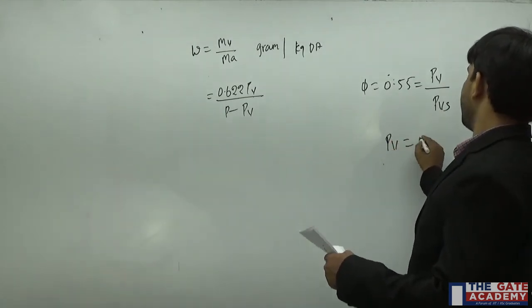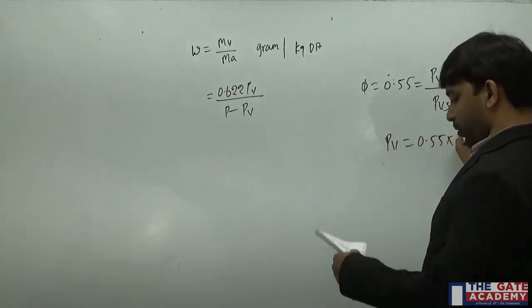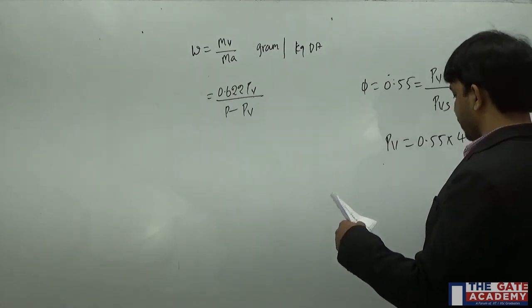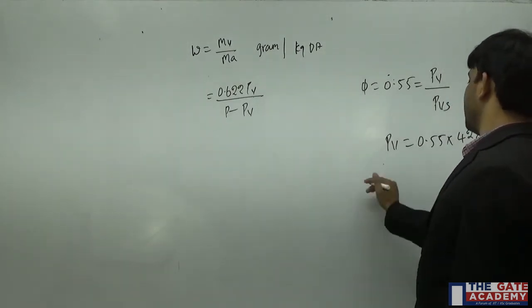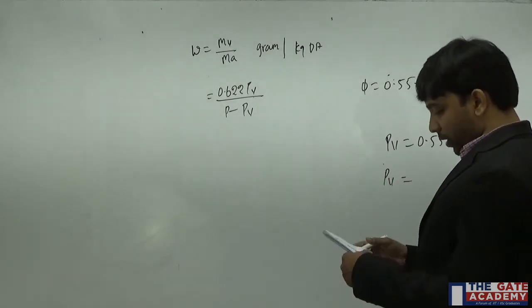So I can write PV is 0.55 into 4246 Pascal. From here you will get partial pressure of water vapor.